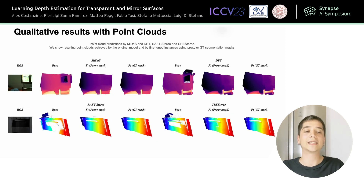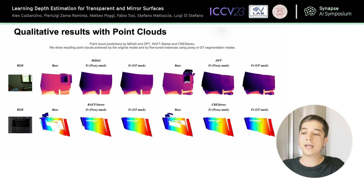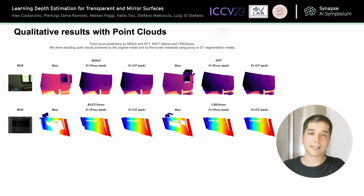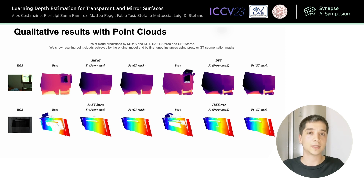Let's see some qualitative results in the point cloud. In this example we have two planar scenes. Before fine-tuning, the windows and the oven window have points scattered at a very long distance from the plane in which they lie. After fine-tuning, all the points lie in the same plane, even for transparent surfaces. This is a good indicator that the method works really well after fine-tuning.